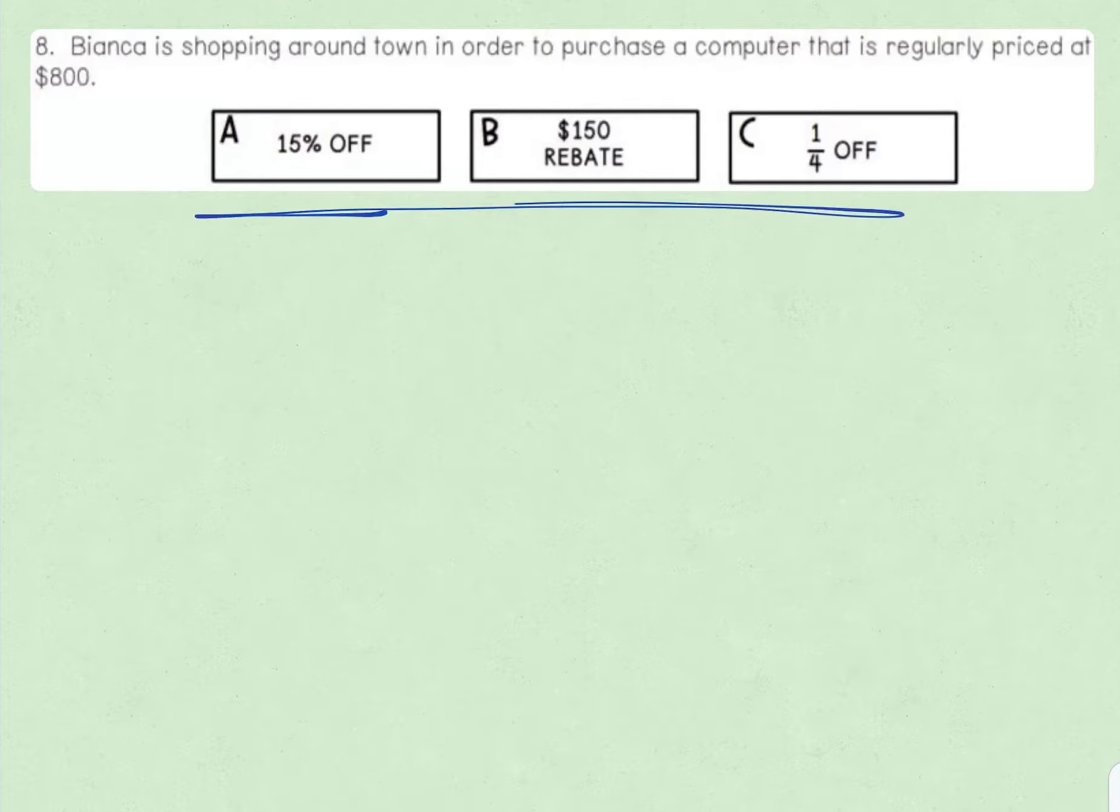For all of these sales, you would subtract this amount from the purchase price. So we're going to do both parts today. Let's go ahead and start with part A, 15% off. Now, you did this with the sales tax and income tax where you had the percent and you had to find out how much money that actually is. So go ahead and calculate that now. What would be 15% of $800?